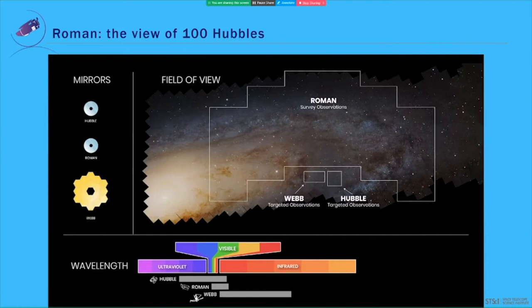Hubble and Webb provide detailed views of a small patch of sky at any given time. Roman will provide Hubble quality data with about 100 times the field of view. The odd shape you see for the Roman field of view is from its primary science camera called the Wide Field Instrument. Now not shown here on this slide is the Roman's coronagraphic instrument.